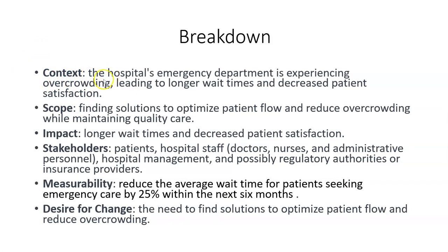For the context: the hospital emergency department is experiencing overcrowding, leading to longer wait times and decreased patient satisfaction. For scope: finding a solution to optimize patient flow and reduce overcrowding while maintaining quality care. The impact: longer waiting times and decreased patient satisfaction. Stakeholders: patients, hospital staff, hospital management, and possibly regulatory authorities and insurance providers. Measurability: reduce average wait time by 25% within the next six months. And the desired change: the need to find solutions to optimize patient flow and reduce overcrowding.